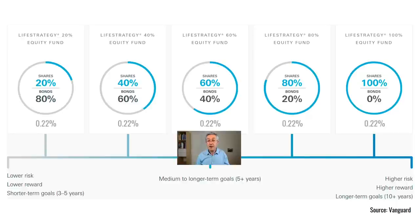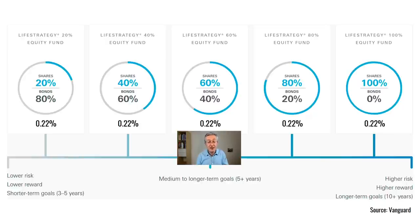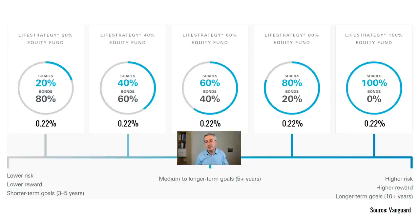The ongoing fee that you pay for these funds is quite low — just 0.22% every year. That means for every £10,000 that you invest, you'd pay £22 a year. That never actually comes out of your account; it's just subtracted from your daily returns. There are also Life Strategy funds for US investors.